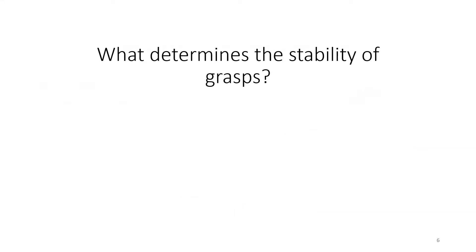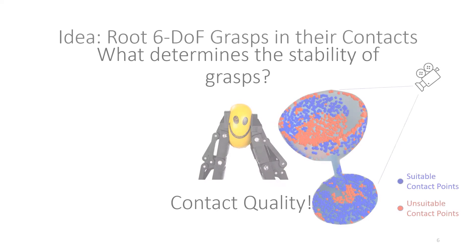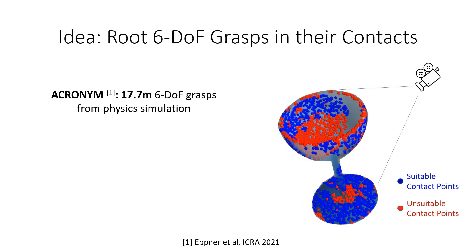So what determines the stability of grasps? Yeah, contact quality. So our idea is to root 6DOF grasps in their contacts. The underlying assumption is that most stable grasps have at least one visible contact.